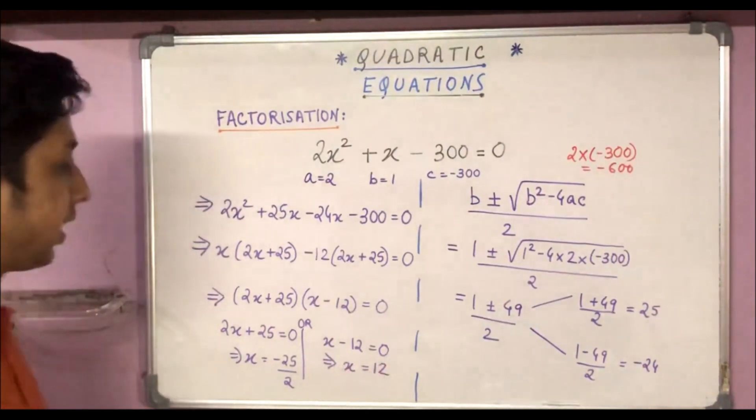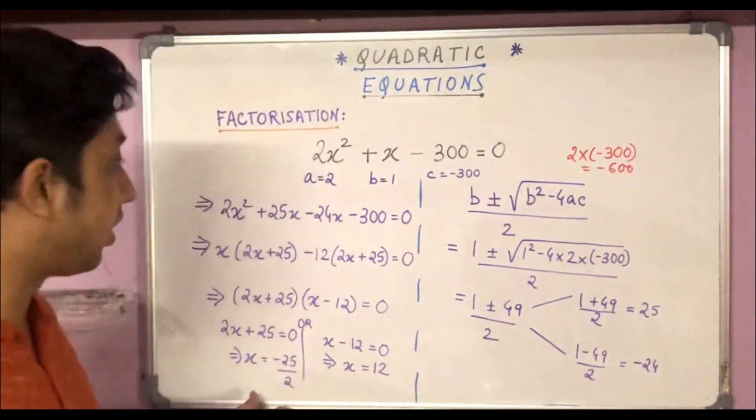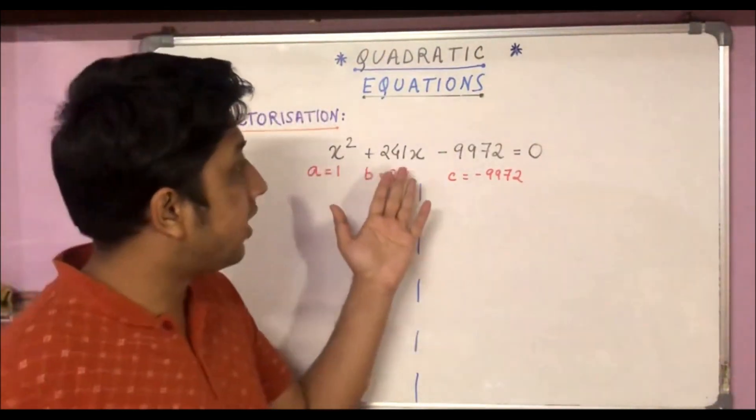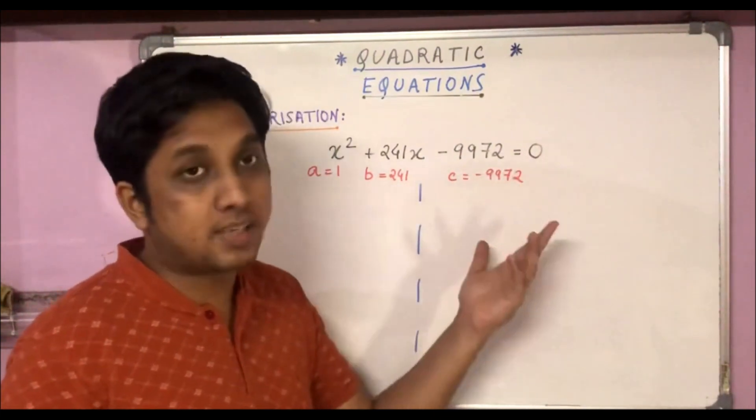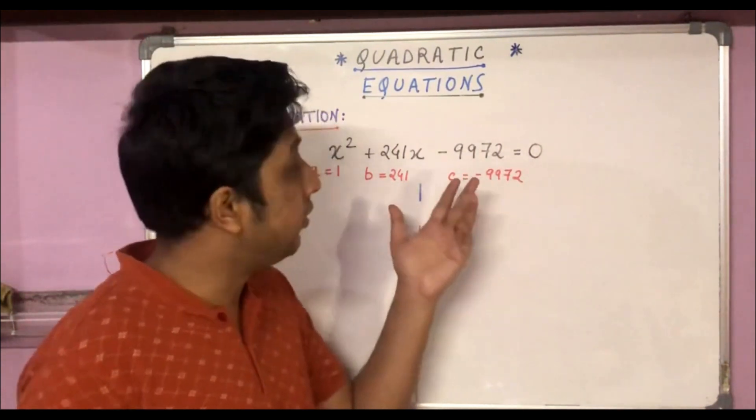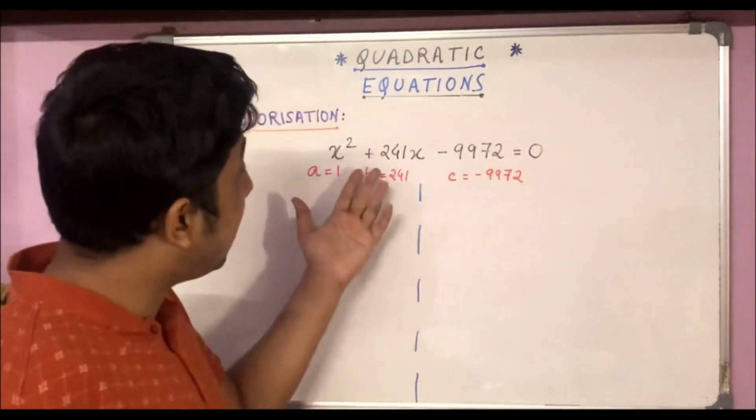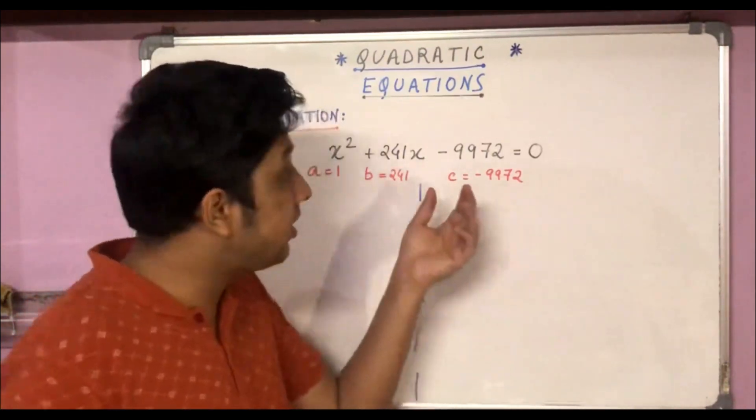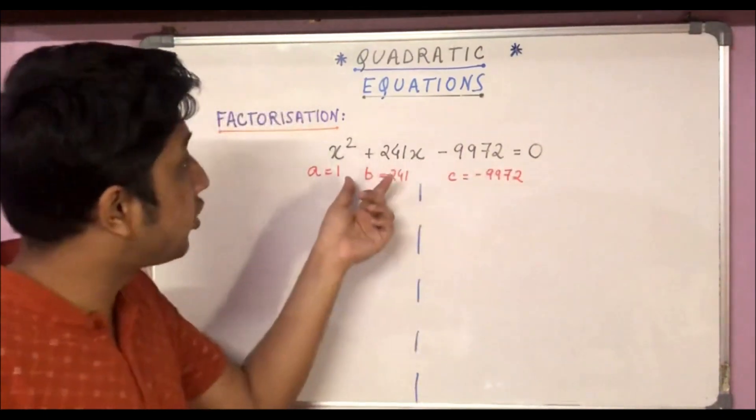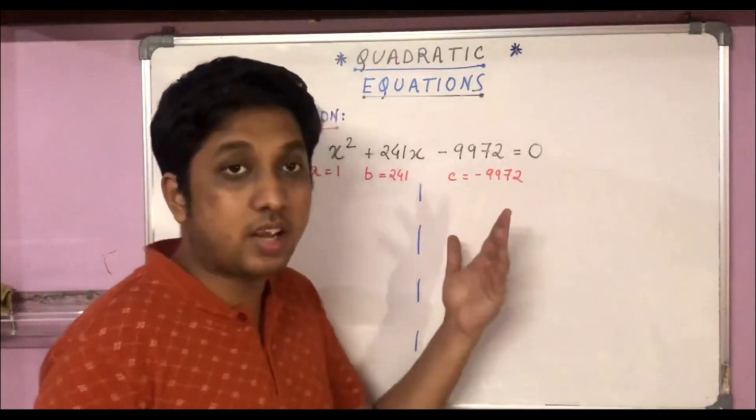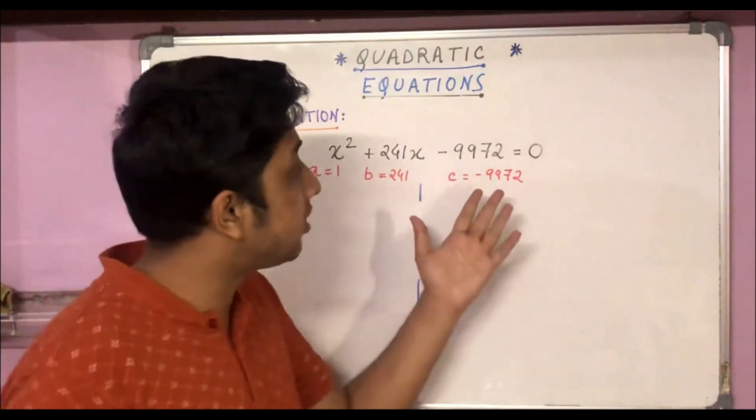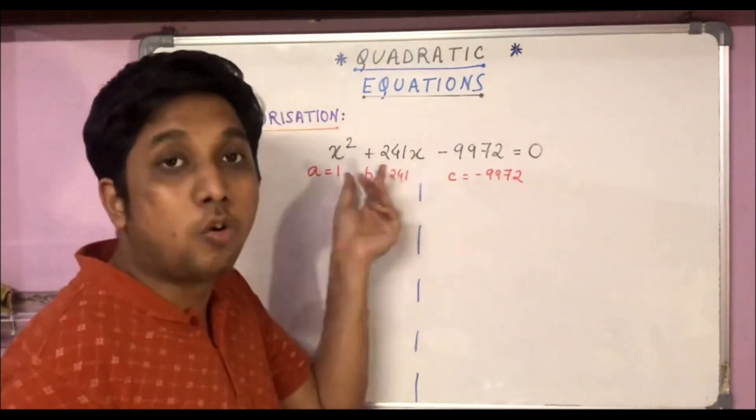So we get the two roots as 12 and -25/2. So let's solve another such equation. We have x² + 241x - 9972 = 0, and suppose this equation also we have to solve by factorization. We can't use quadratic formula, so we need to show the middle-term break steps. Now in this equation we can see that 9972 is a big number, the constant term, and so is 241, the coefficient of x. We have deliberately chosen such an equation to show that the trick works on such equations as well where the constant term or the coefficients are big numbers.